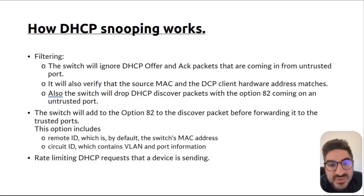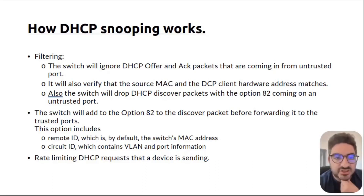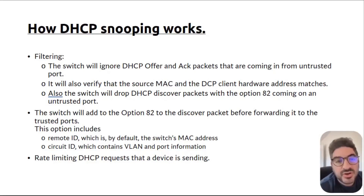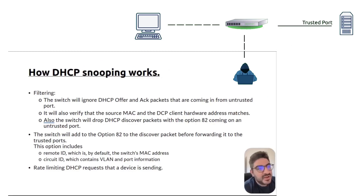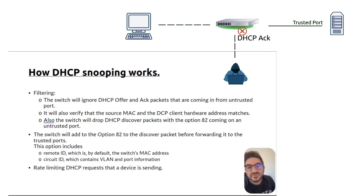Now let's explain how DHCP snooping works at the packet level — this is fairly theoretical, so if you're not interested just skip to the next section. Whenever you configure DHCP snooping, the switch starts by monitoring all DHCP traffic, especially on untrusted ports. It will ignore and drop all Offer and Acknowledgement packets coming from untrusted ports, since those should only be sent from the server.